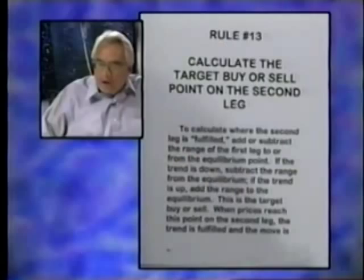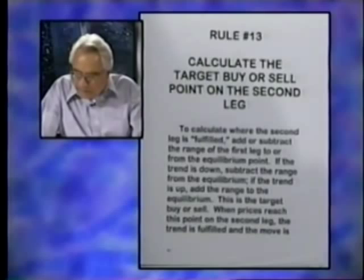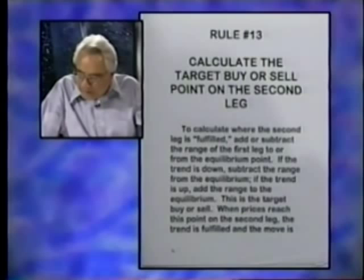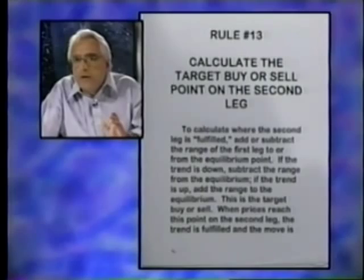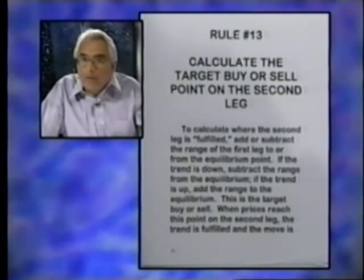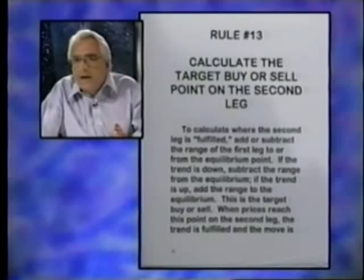Rule 13 is to calculate the target buyer's sell point on the second leg. We've gone over this in a lot of detail, but this is to calculate where the second leg is fulfilled. You need to add or subtract the range of the first leg to or from the equilibrium point. You take the range, look for the equilibrium point, then add or subtract it based on whether you think it's going to go up or down — that's where the market needs to go to be fulfilled.